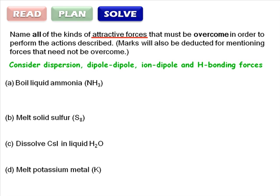For Part A, what forces need to be overcome to boil liquid ammonia? Ammonia is a polar molecule with NH bonds. To convince yourself it is polar, draw the Lewis structure and notice it has three bonding domains and one non-bonding domain.